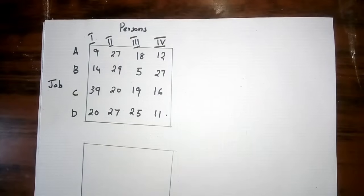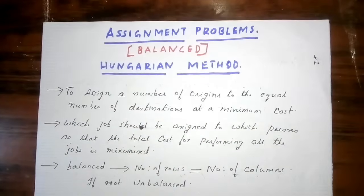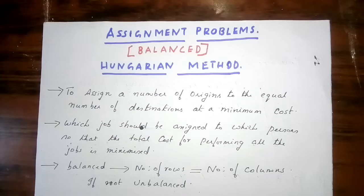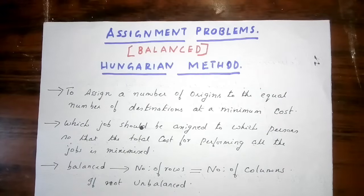The best assignment is found using the Hungarian method. This is the Hungarian method — the best assignment method — and we will follow it step by step. The total cost is minimum.